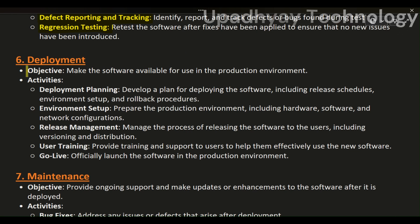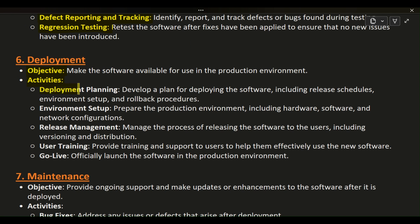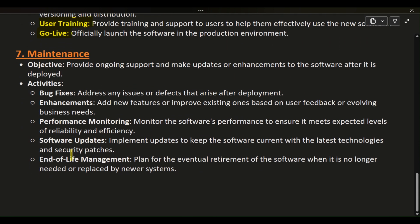Phase 6: Deployment. Objective: make the software available for use in the production environment. Activities: Deployment planning — develop a plan for deploying the software, including release schedules, environment setup, and rollback procedures. Environment setup — prepare the production environment, including hardware, software, and network configurations. Release management — manage the process of releasing the software to users, including versioning and distribution. User training — provide training and support to users to help them effectively use the new software. Go live — officially launch the software in the production environment.